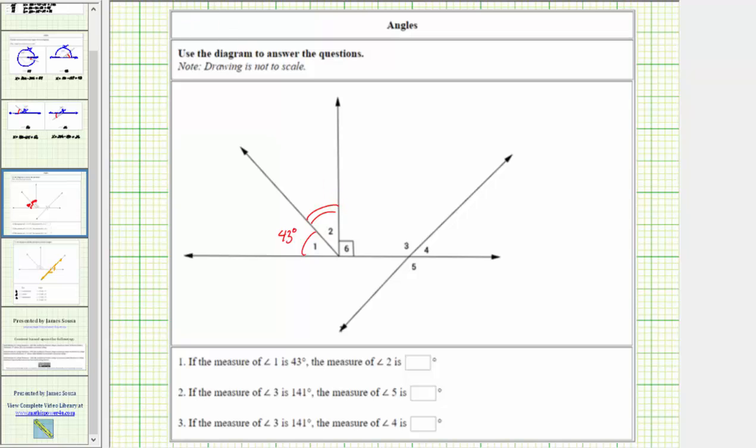Notice together, the two angles form a right angle, where this would be one ray of the right angle, and this is the other ray of the right angle. Because together they form a right angle, the sum of the measures must equal 90 degrees, and therefore the two angles are complementary.